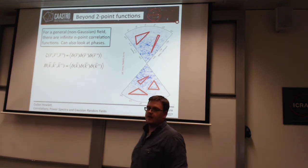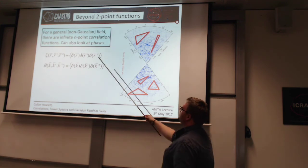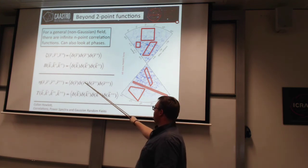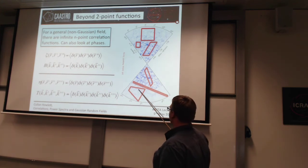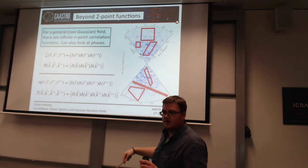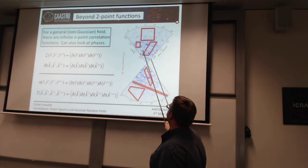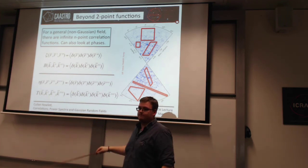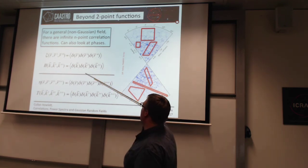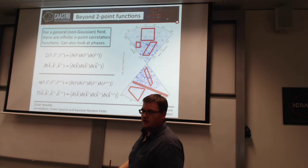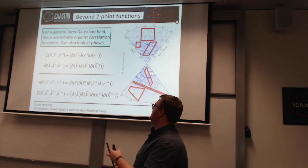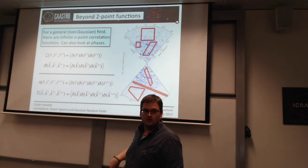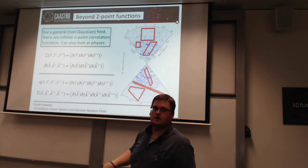You can go to even higher order — four-point functions, the four-point correlation function in real space and the trispectrum in Fourier space — looking at different four-sided shapes: trapezia, parallelograms, etc. These things haven't been used much in galaxy clustering until quite recently, though three- and four-point functions have been known about for years and are discussed in Peebles' 1980 book. Actual measurements of these have only just started coming out.